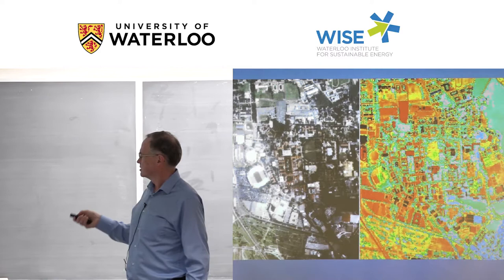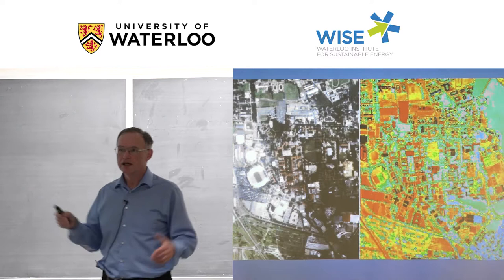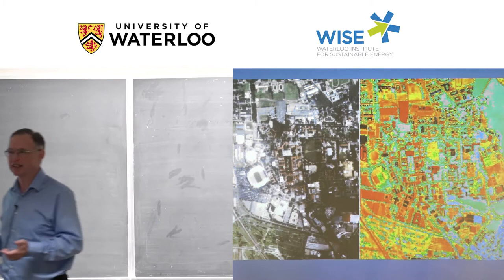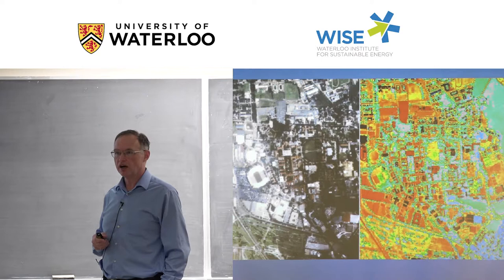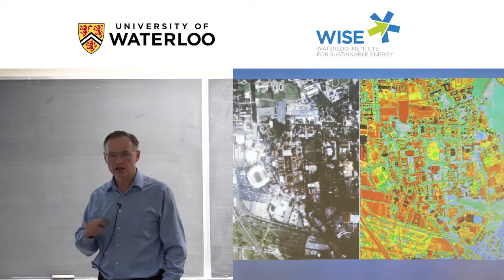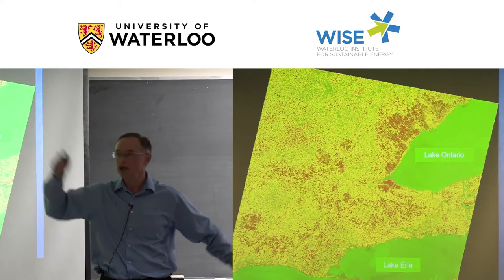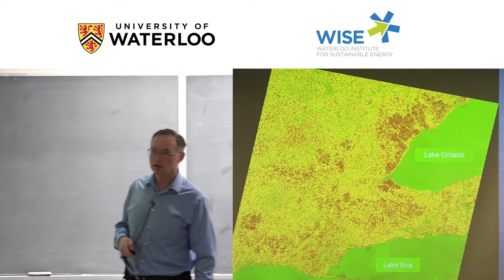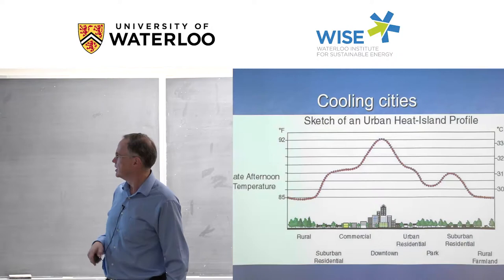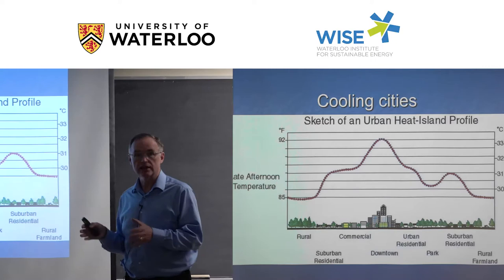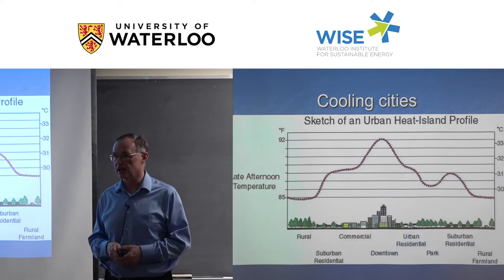The heat island effect in cities — visible in southern Ontario with hot spots in Hamilton, Toronto, Kitchener, Waterloo, and Guelph — is arguably a sign of a poorly designed energy system. We are improving — white roofs replacing black roofs in southern states cool the cities — but initially they weren't designed to be cool. Nature has had a long time to learn how to use energy well; why do we often build systems that go in the opposite direction?